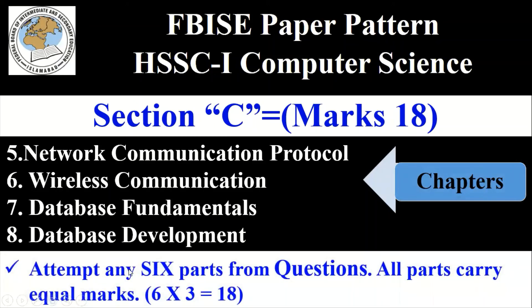To get 18 marks in Section C, you have to attempt any six parts from the given questions. All parts carry equal marks — each part has three marks. So six multiplied by three equals 18, and in this way you will get 18 marks in Section C.